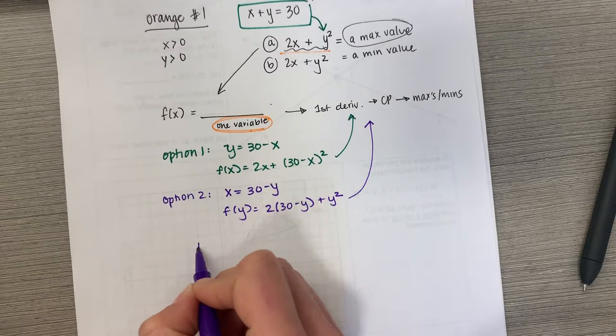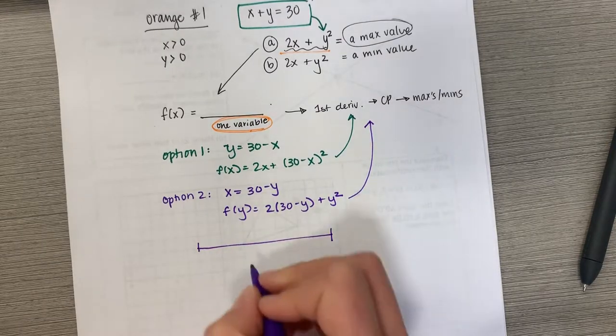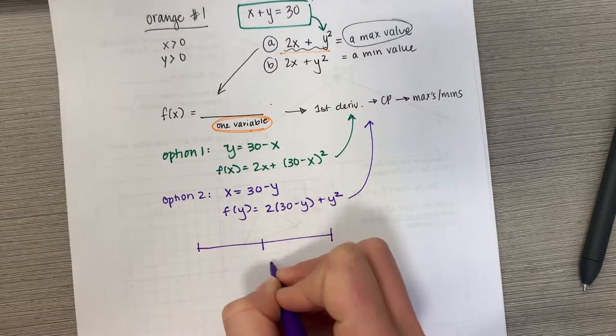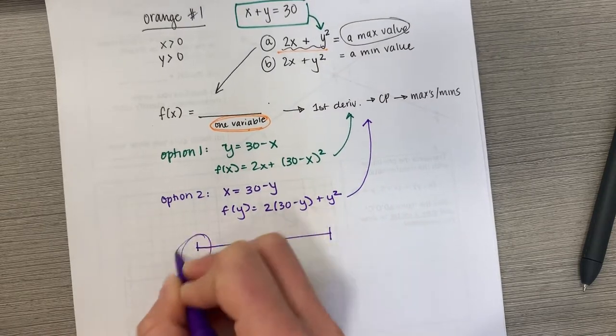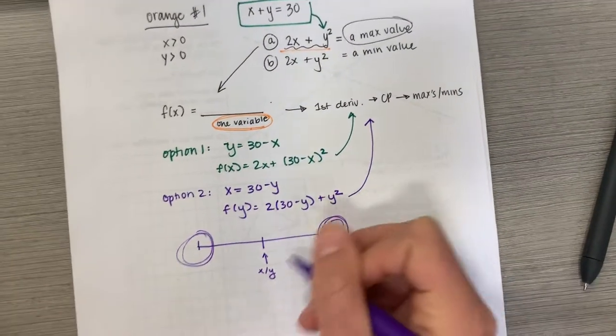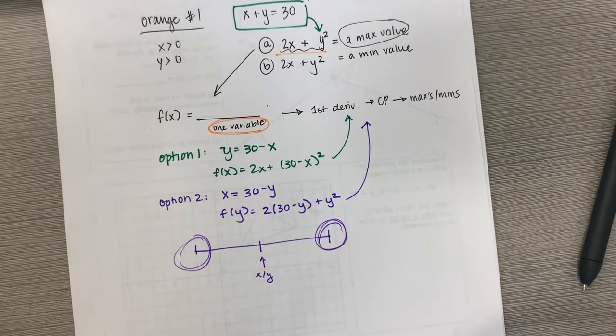You should, on your sign analysis graph, have one x or y value here. But you also should be checking your endpoints.